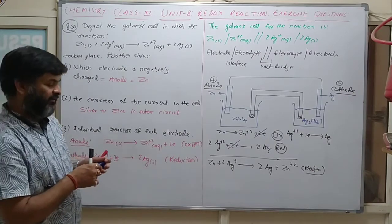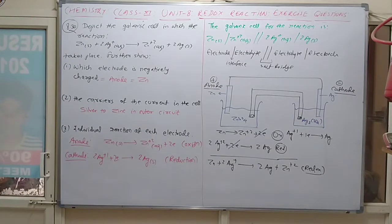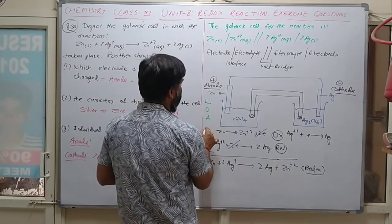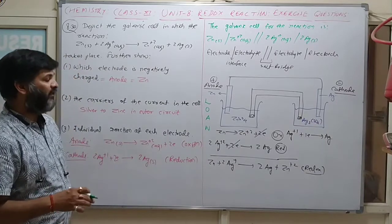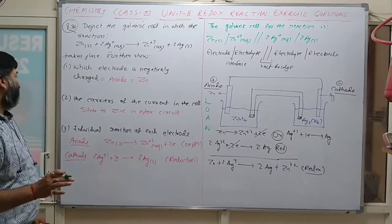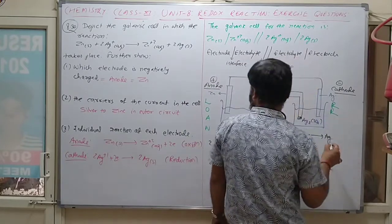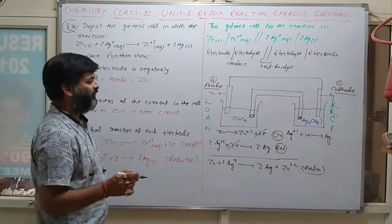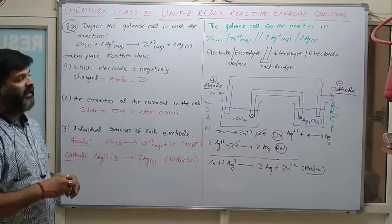Remember the mnemonic LOAN: L = Left hand side, O = Oxidation, A = Anode, N = Negative. And correspondingly: right hand side, reduction, cathode, positive. When oxidation and reduction half-reactions combine, the redox reaction results.